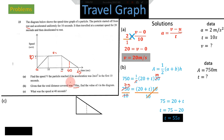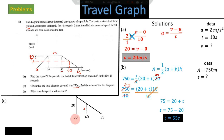Looking at the triangle: the left side has a height of 20 m/s, and the speed x at 40 seconds is what we're calculating. The time differences are: from 30 to 40 is 10 seconds, and from 40 to 55 is 15 seconds. We can use similarity — we have a bigger triangle and a smaller triangle, and we use corresponding sides.